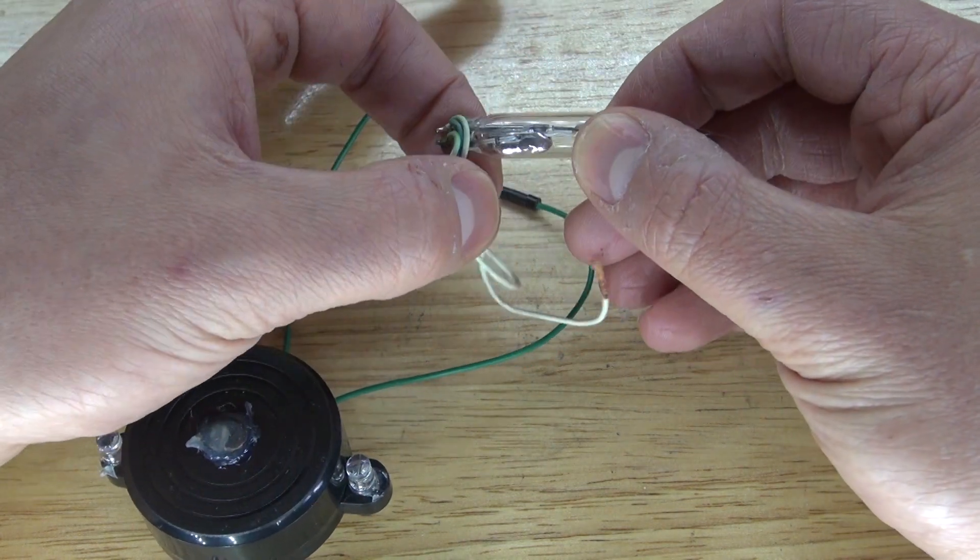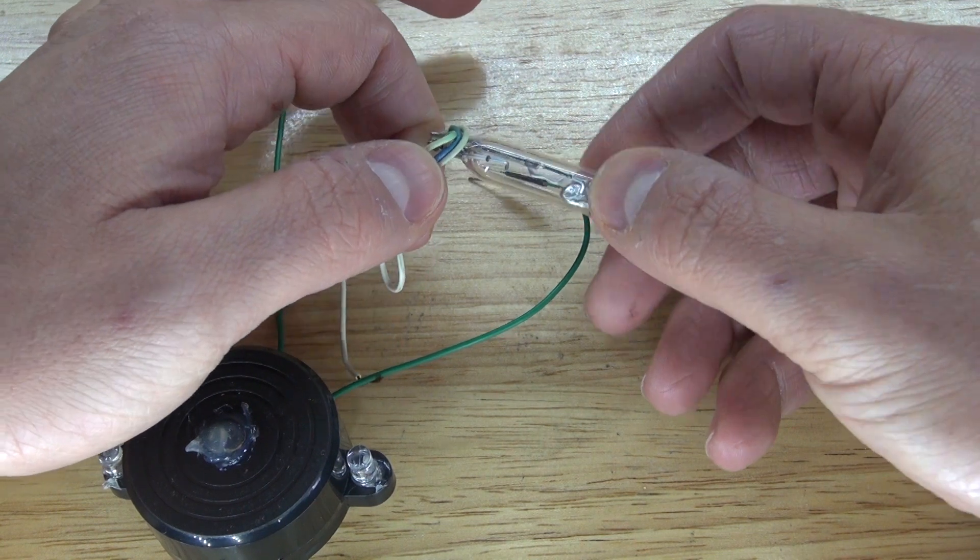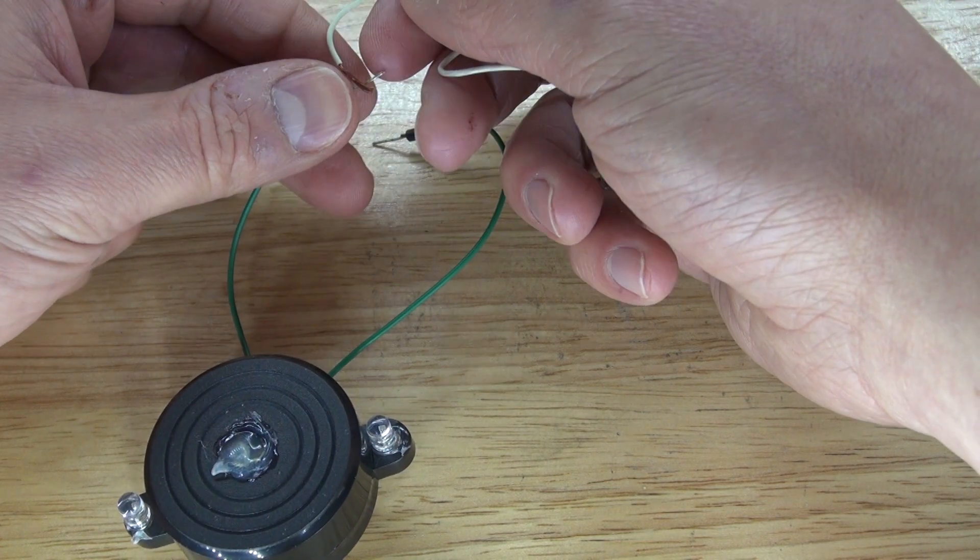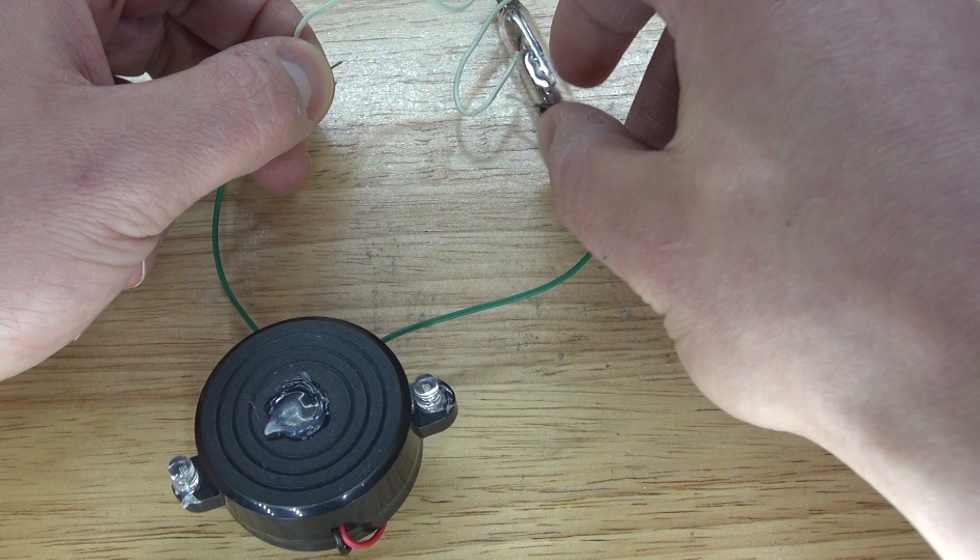Now something else you can test. I have right here this mercury tilt switch. You can tell that there could be a connection by touching this wire and then touching this wire.